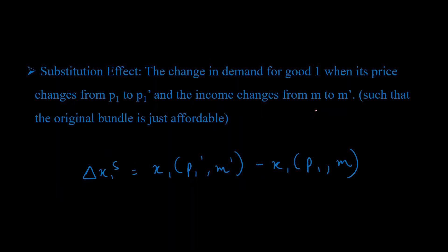Now, let's take a look at these effects formally. The substitution effect is defined as the change in demand for good one when price changes from P1 to P1 dash and the income changes from M to M dash. M dash being the adjusted income so that the original bundle is affordable at the new price. The substitution effect is denoted by delta XS. And you can calculate that by evaluating the demand for good one at the original price and the original income and subtracting that from the demand for good one at the new price and the adjusted income M dash.